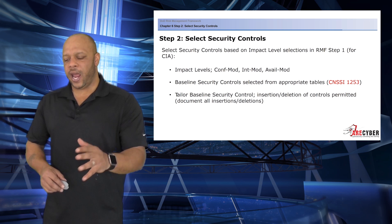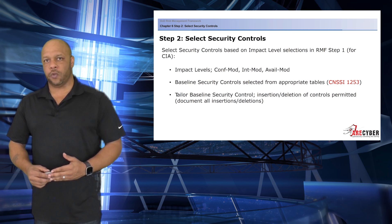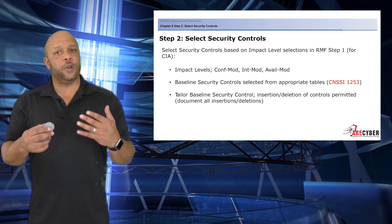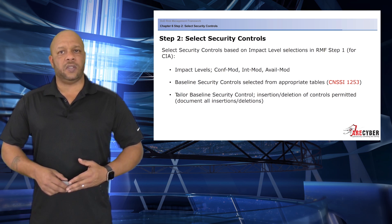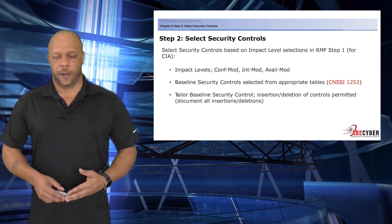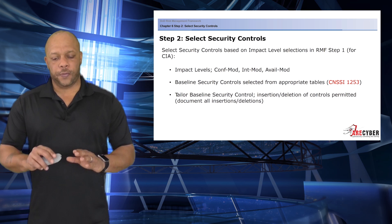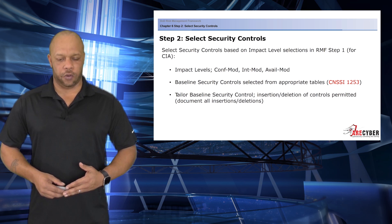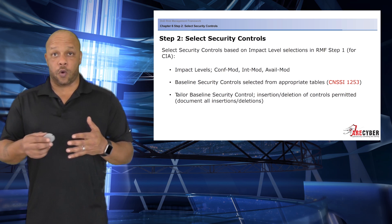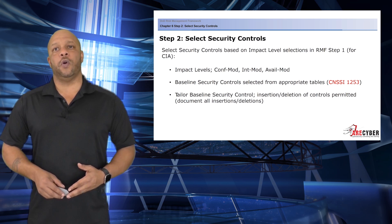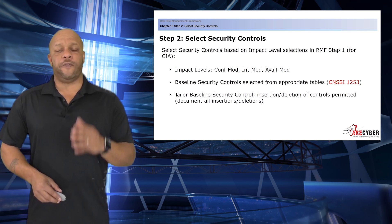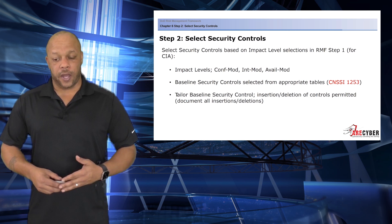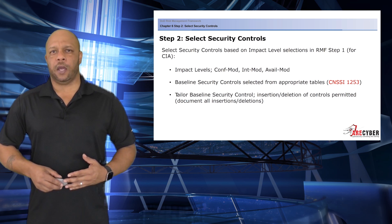Now it's time to enhance the baseline security controls from the appropriate tables. For the Department of Defense, that would be the CNSSI-1253. Throughout this step, we are going to tailor our baseline security controls, either by inserting or deleting controls as appropriate for the information system itself, and then document any changes that we make.